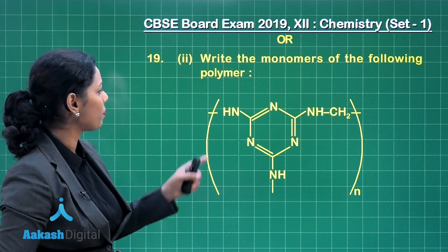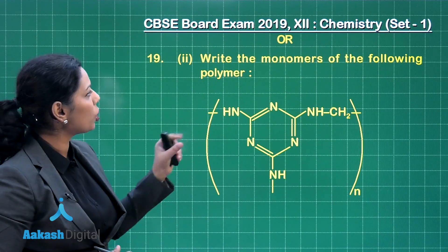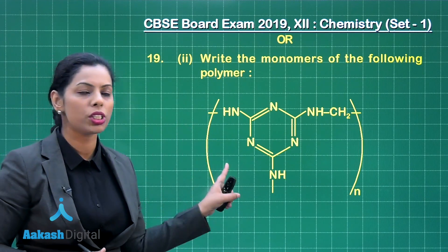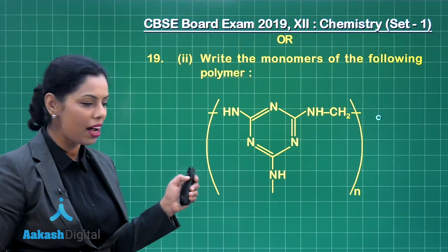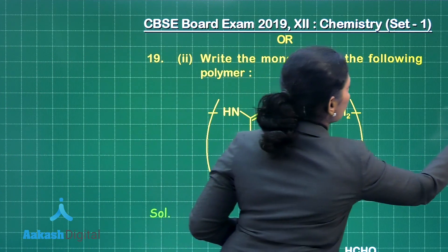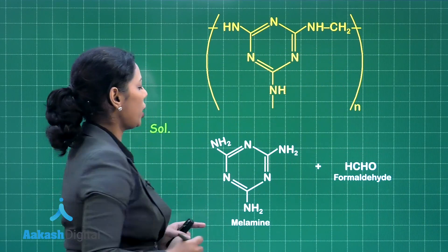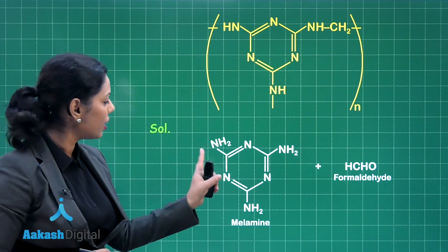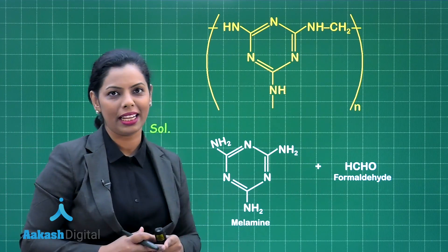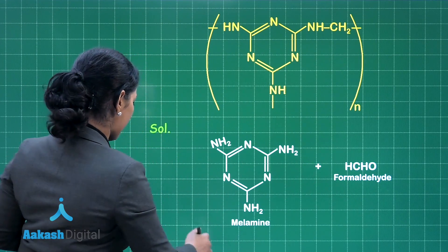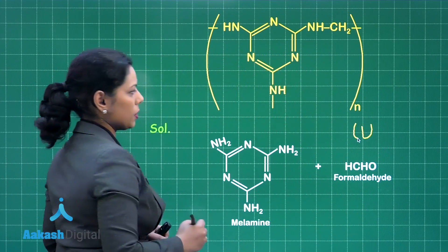After that, the second part: once again a polymer structure is given and you have to mention its monomers. If you check the structure, you will observe that it is the polymer of melamine and formaldehyde. By writing this, you will get one mark for this part.